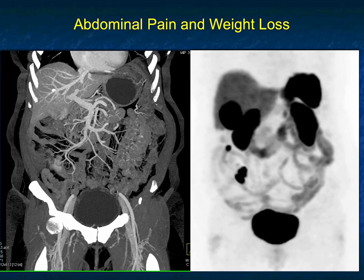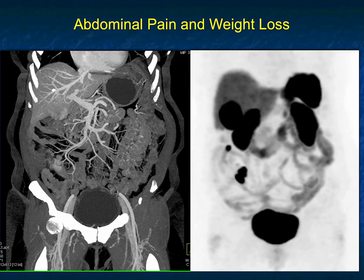In this patient with abdominal pain and weight loss, you see on the CT scan with MIP imaging there's an enhancing structure in the right lower quadrant, which matches the enhancing structure seen on the octreotide scan. There's a subtle mass in the liver, which also matches the study here.